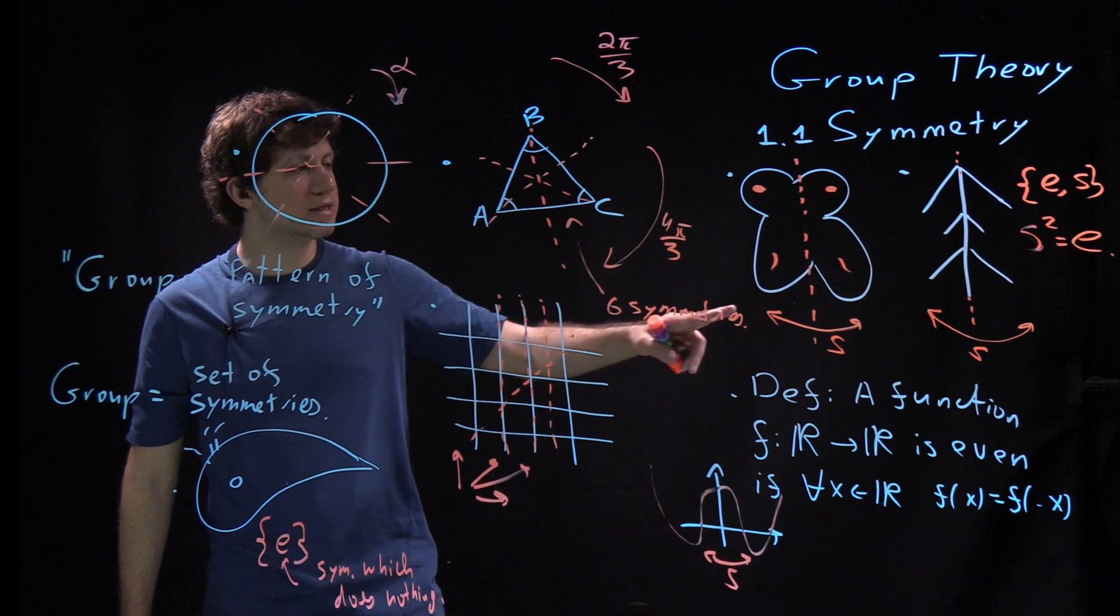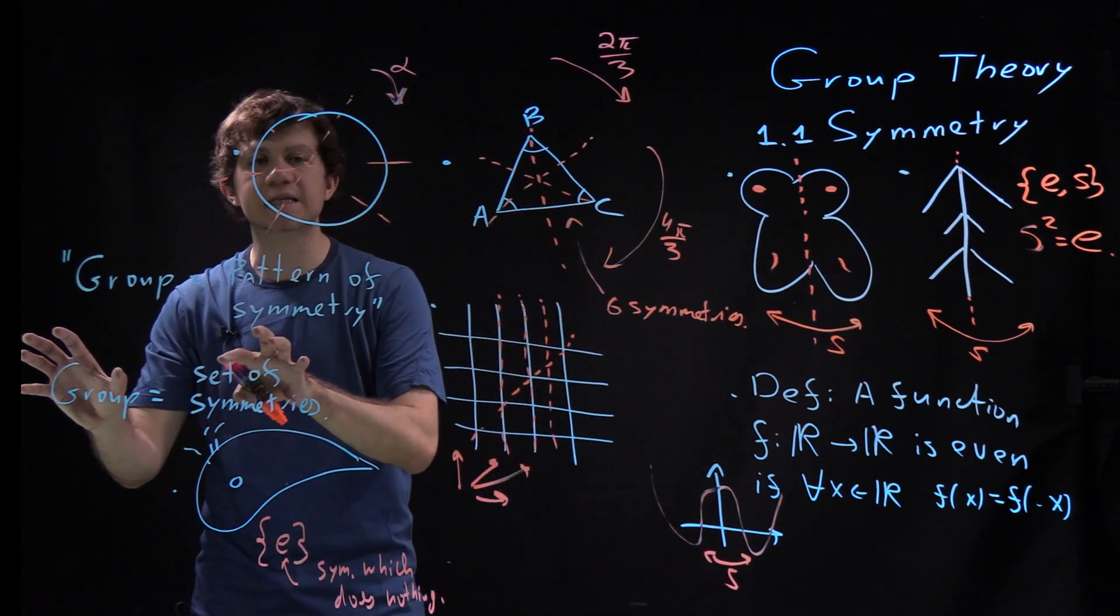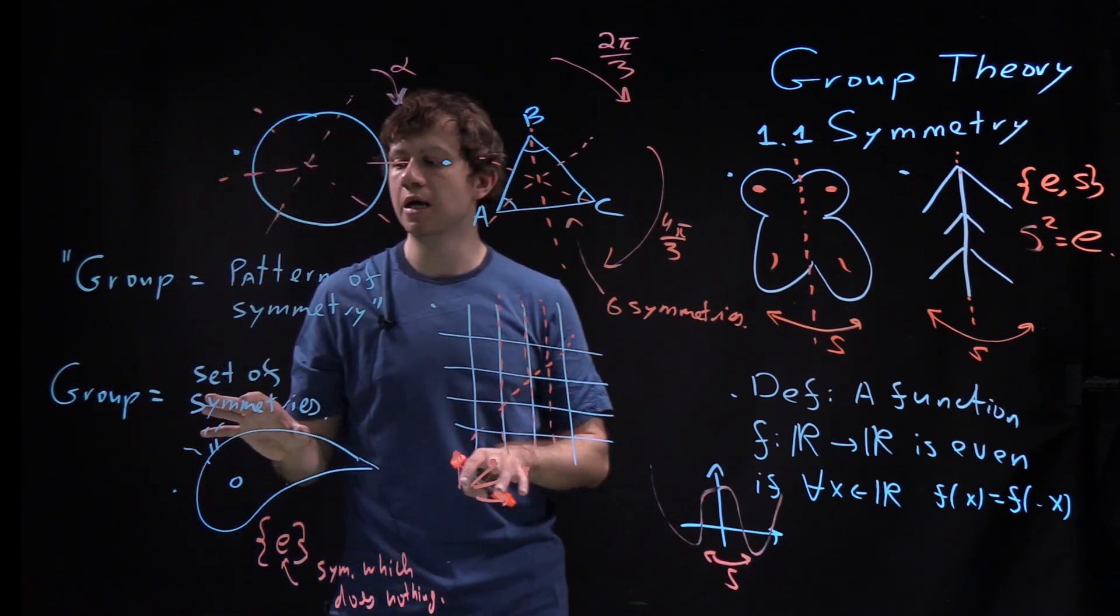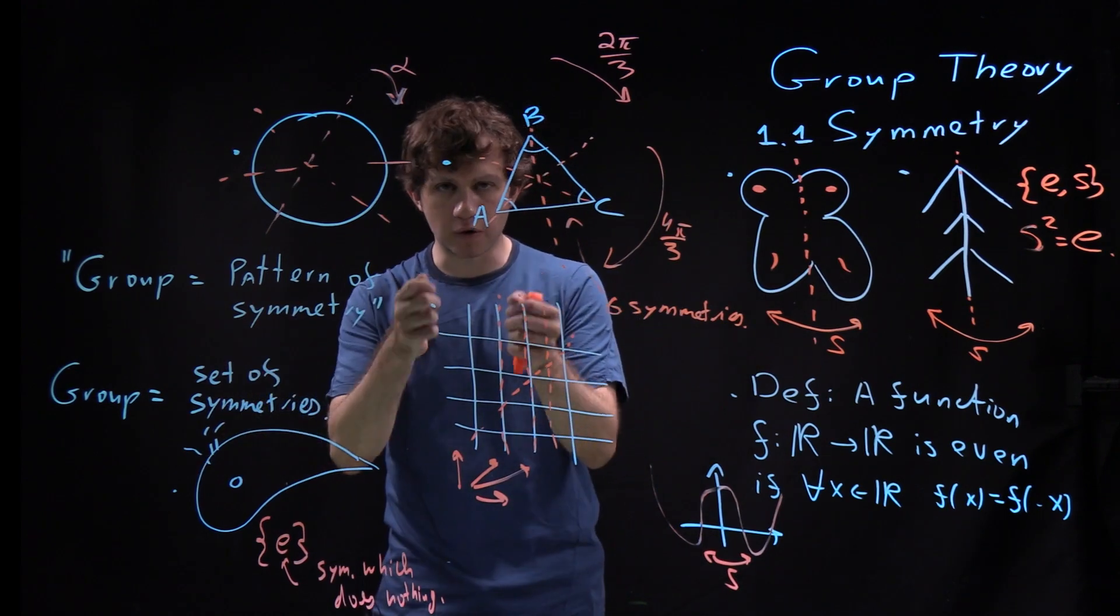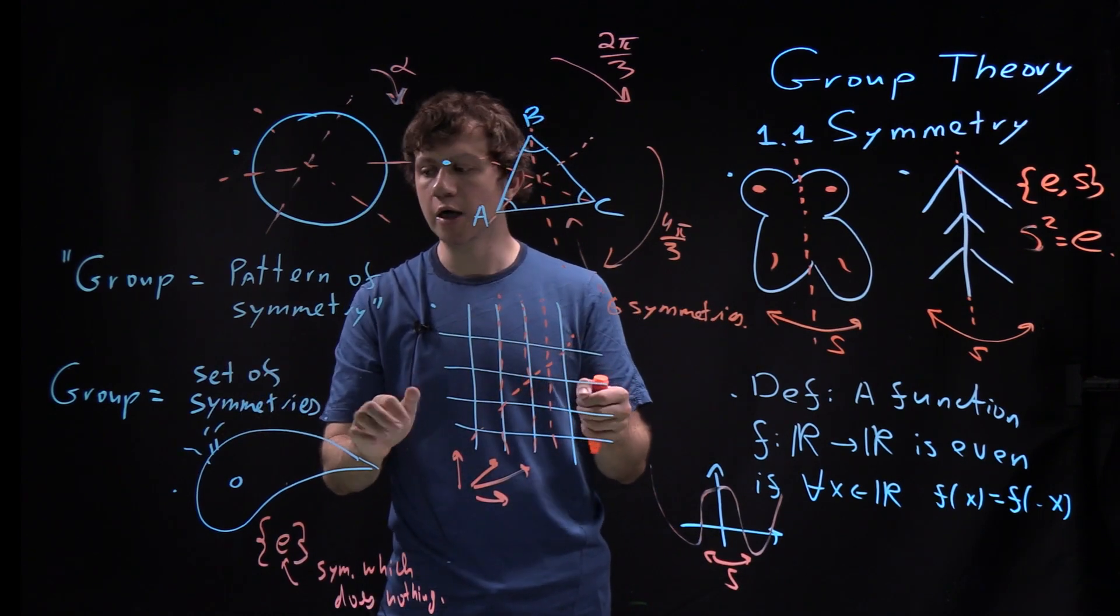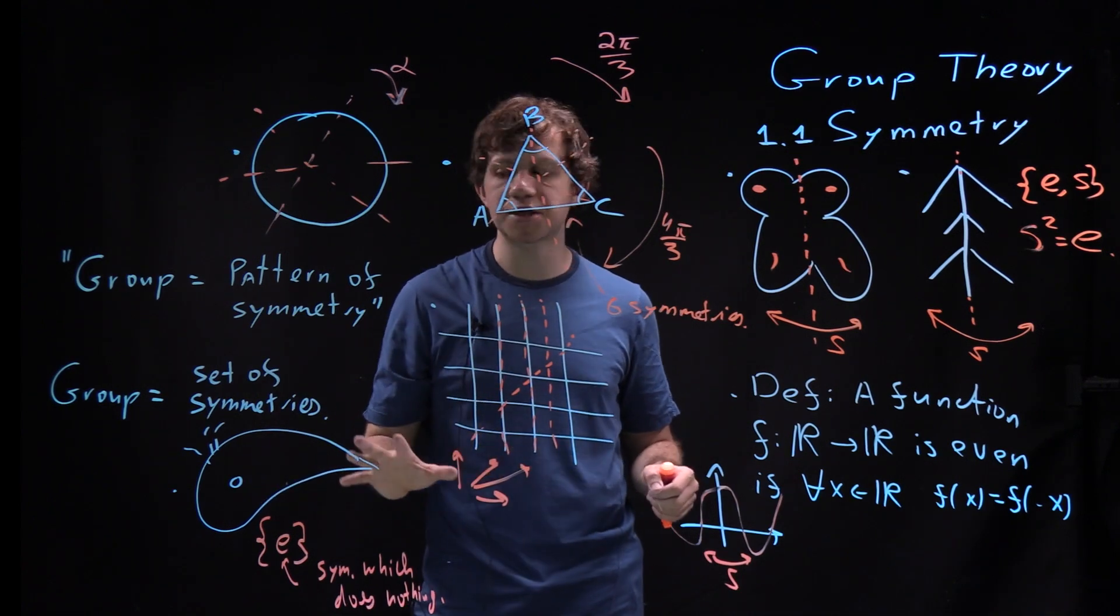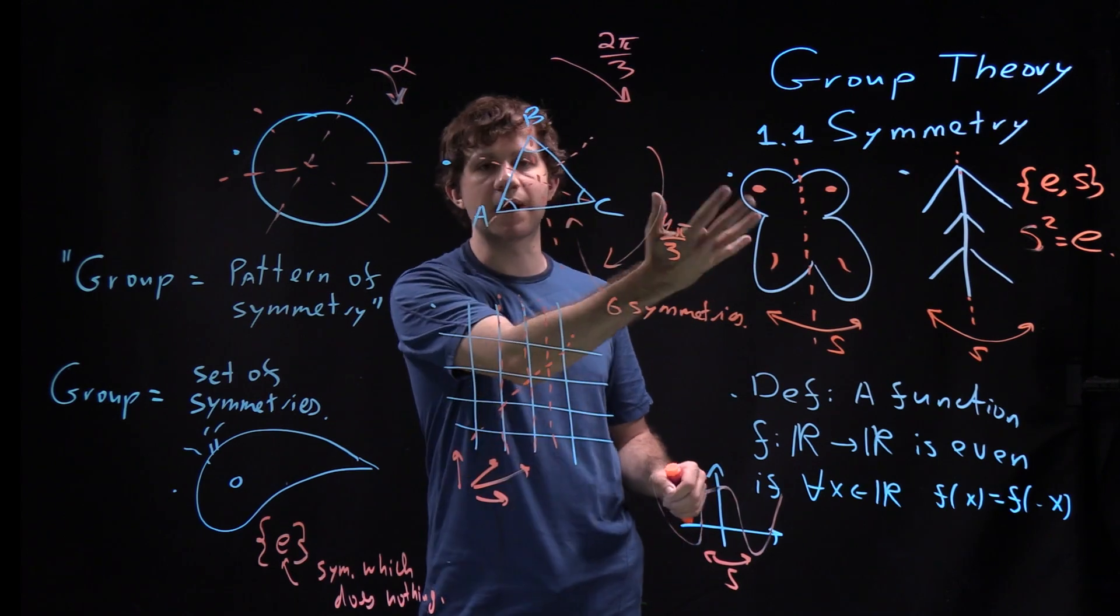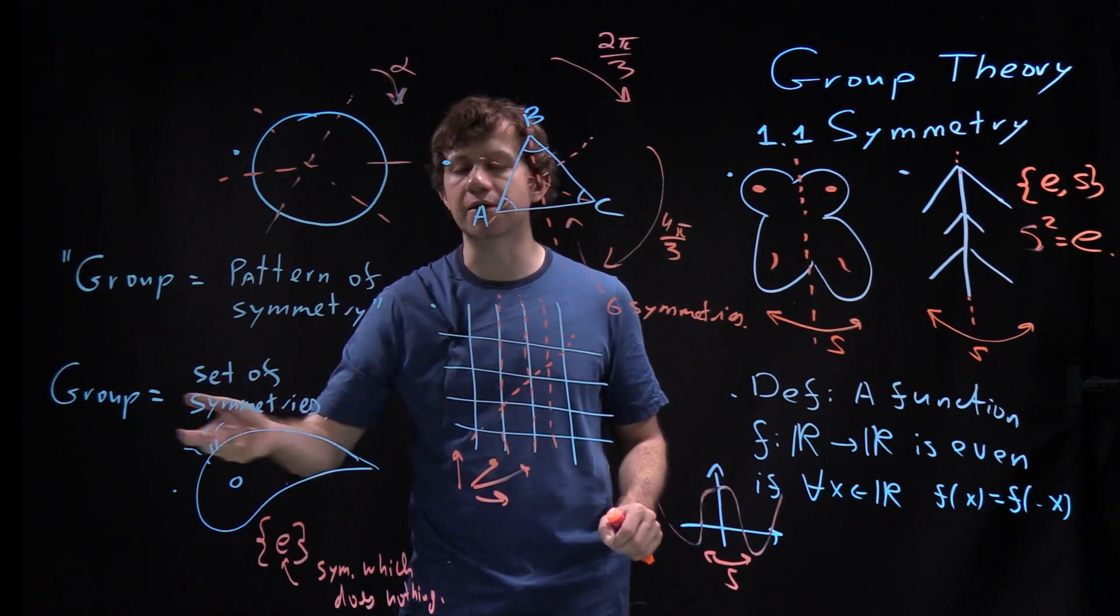And this property—how you can make this composition in a group—is exactly what a group is. So a group is a set plus this additional operation of multiplying elements there, which has certain properties. And these properties are just those properties we expect from a general situation when your set is a set of symmetries of something.